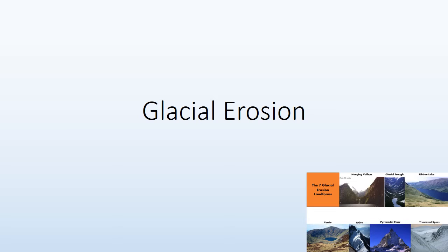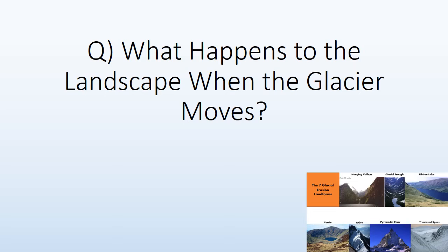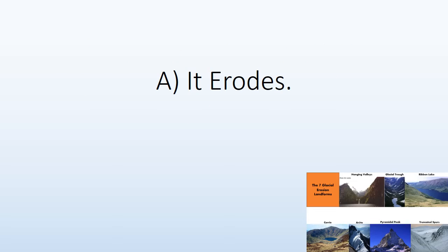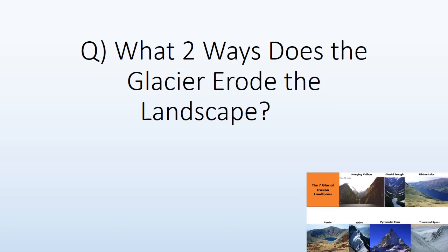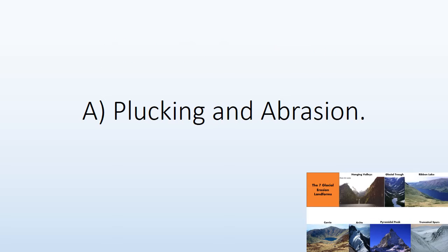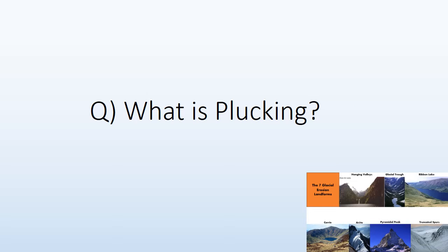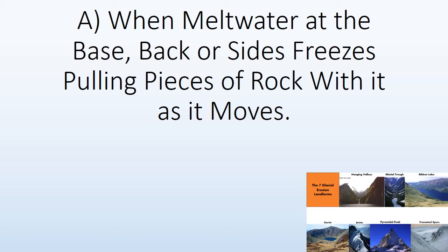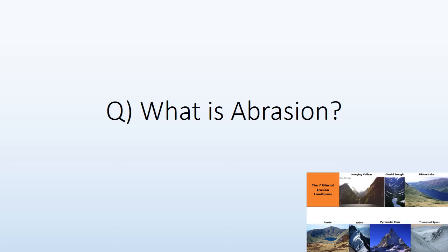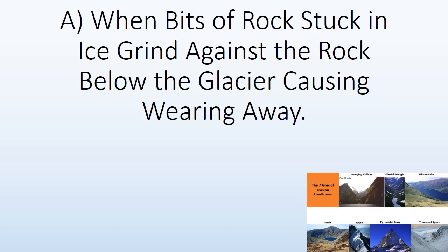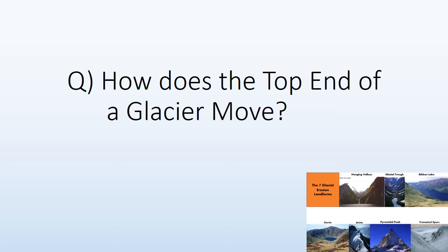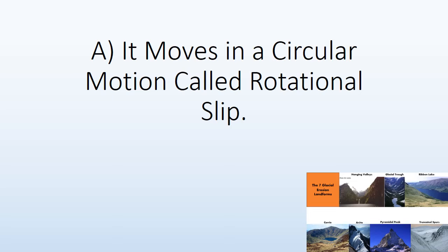Glacial erosion. When the glacier moves, it erodes the landscape in two ways: plucking and abrasion. Plucking is when meltwater at the base or sides freezes, pulling pieces of rock with it as the glacier moves. Abrasion is when bits of rock stuck in the ice grind against the rock below, causing wearing away. The top end of the glacier moves in a circular motion called rotational slip.